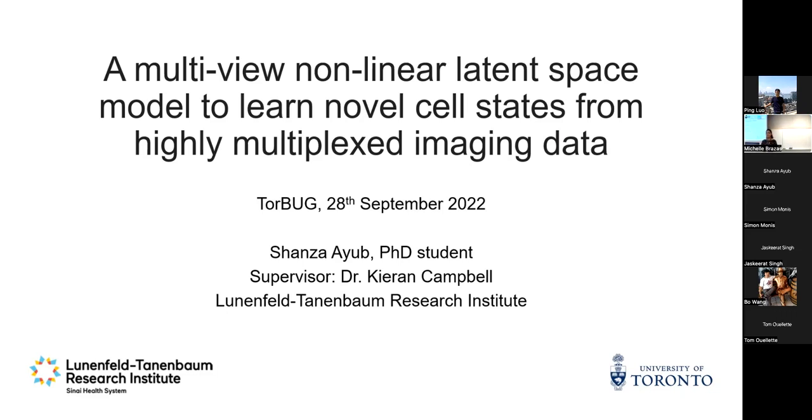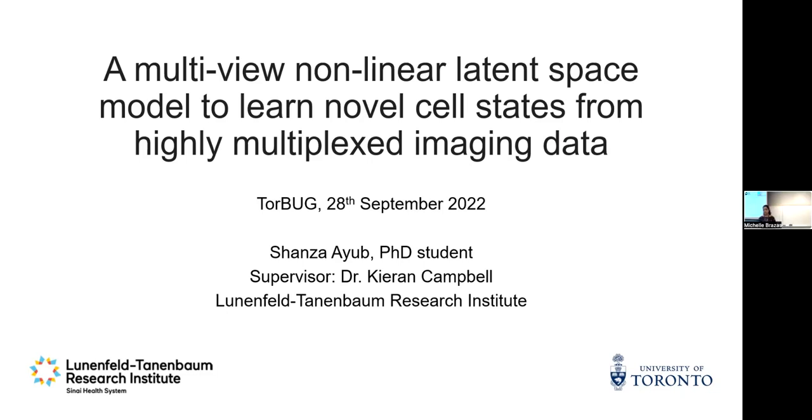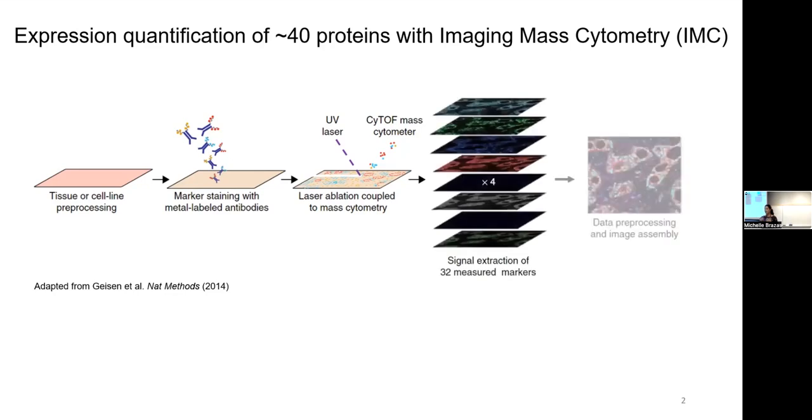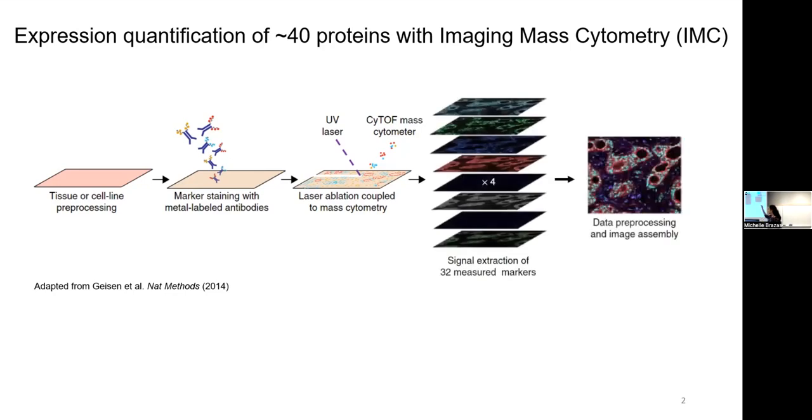So as Aksa mentioned, the technology that we're focusing on is imaging mass cytometry or IMC for short. IMC allows us to quantify close to 40 proteins simultaneously. How it does that, it makes use of metal conjugated antibodies and essentially is a laser ablation system coupled to a time-of-flight mass cytometer. What you get at the end of IMC is this high-dimensional image where all these different stains that you see correspond to a different protein measured in the experiment.